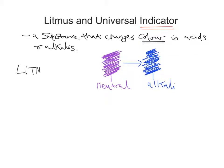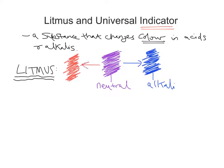So we have an alkali if litmus turns blue. We're talking about litmus indicator here. In the presence of an acid, litmus indicator will go red. Now here lies the problem: we can get an acid going red, an alkali turning litmus blue — but that's it. It does not tell us how acidic or how alkaline something is, or how strong an acid or alkali it is.